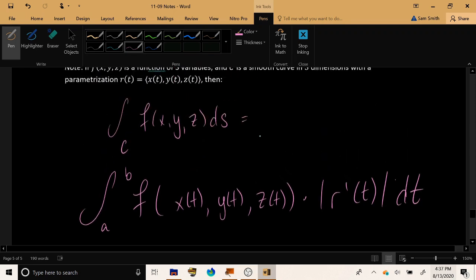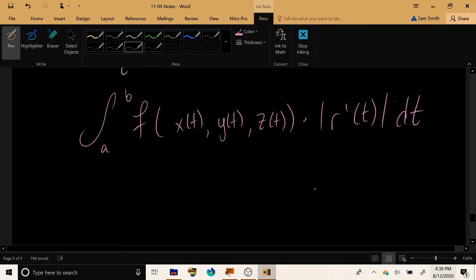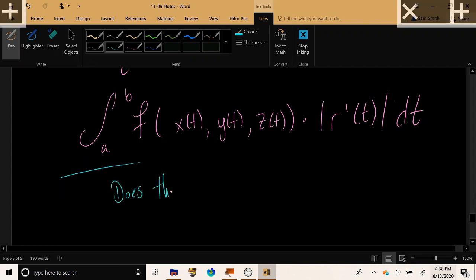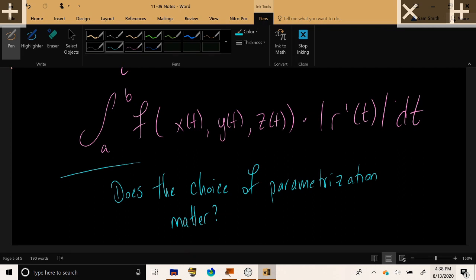Okay. That's all there is to say about line integrals. Now finally one last comment that has to do with the day's concept check which is that does the choice of parametrization matter? There are usually lots of different ways to parametrize any given curve. You can parametrize it at speed 1, you can parametrize it at speed 2, you can parametrize it forward or backward and all kinds of things. Does the choice of parametrization affect the outcome of the line integral? You'll be exploring that in today's concept check.